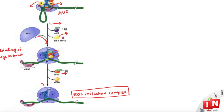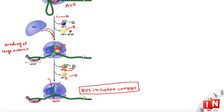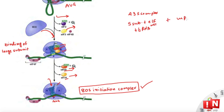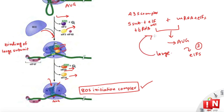Once eIF3 is released — which was keeping the large subunit apart — the large 60S subunit can now bind to the complex. This binding releases the remaining initiation factors eIF1A and eIF5B, and GTP on eIF5B is hydrolyzed. The first tRNA is now properly placed at the P site. This resulting complex is the 80S initiation complex, marking the end of initiation.